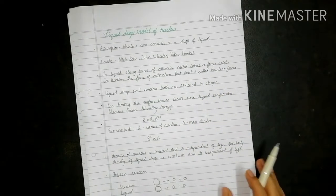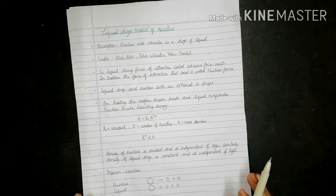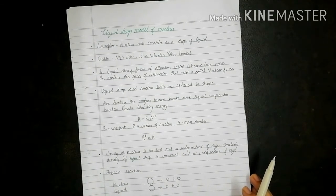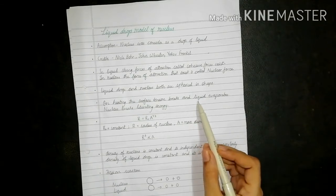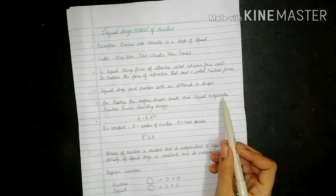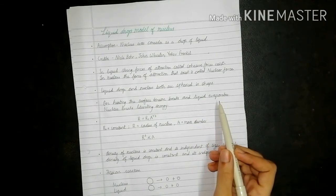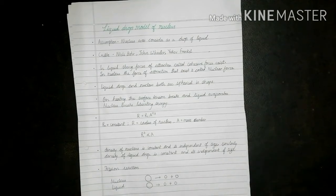The second similarity is that a liquid drop and the nucleus are both spherical in shape. The third similarity is that on heating, the surface tension breaks and the liquid evaporates, whereas when the nucleus breaks, it liberates energy and daughter nuclei are formed.